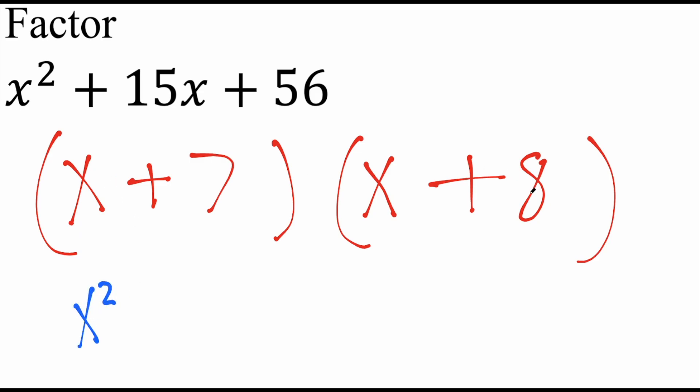x times x is going to give us x squared. x times 8, let's do a little arrow. So x times x is x squared.